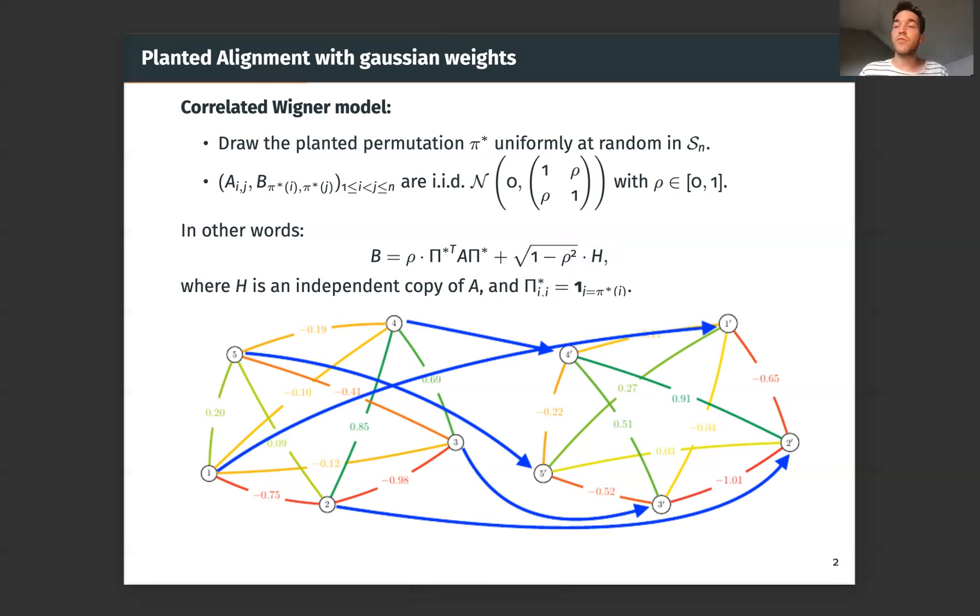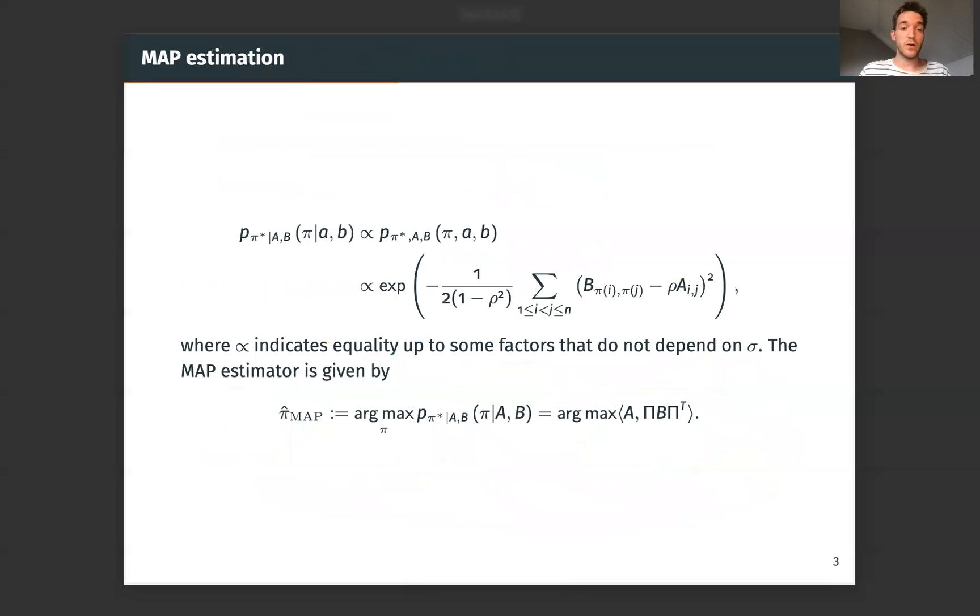So in this inference problem, when we want exact recovery, an optimal estimator is the maximum a posteriori estimator. It's optimal in the Bayes risk sense. So we try to derive this maximum a posteriori estimator. So it's quite simple. We just compute the posterior distribution of π* given A and B and we try to maximize it. And if we want to maximize this posterior distribution, we end up with the same maximization problem as described at the beginning of the talk, this quadratic assignment problem.